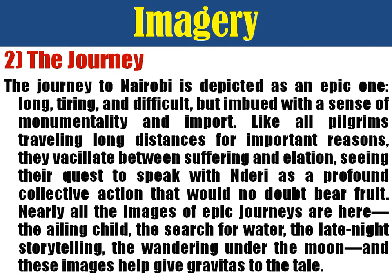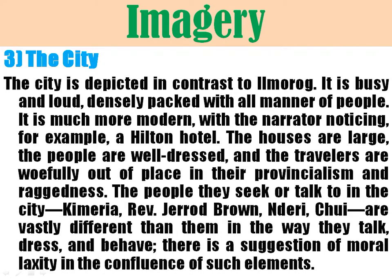Another image found in the novel is the city. There is a great contrast between Ilmorog and the city of Nairobi. In Ilmorog — a rural area — someone who has a bicycle is regarded as a very rich man. But in Nairobi you see modern houses, expensive cars, modern cars, motorcycles, and paved roads — unlike Ilmorog where most houses are built from mud, covered with thatched grass. The houses in Nairobi are large, the people are well dressed, and the travellers are woefully out of place.